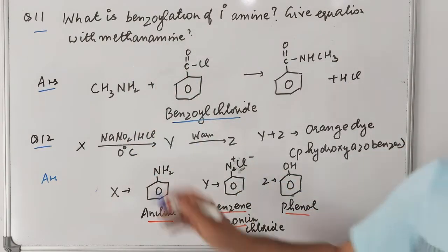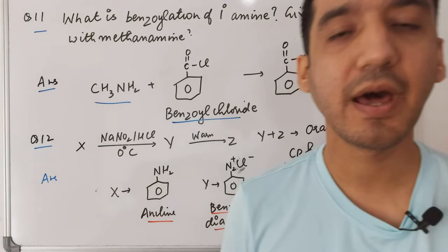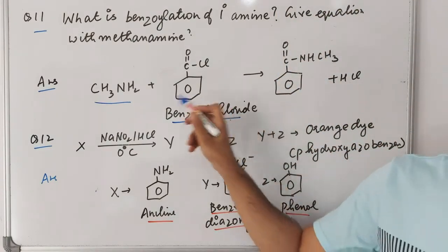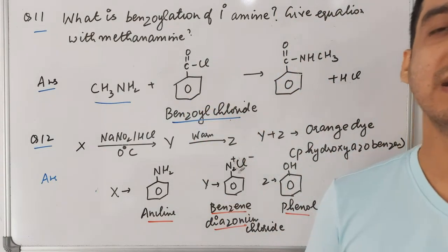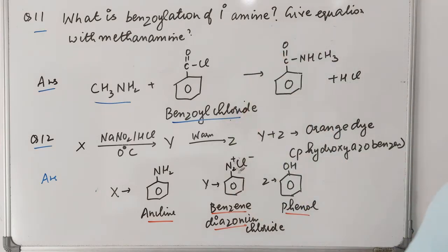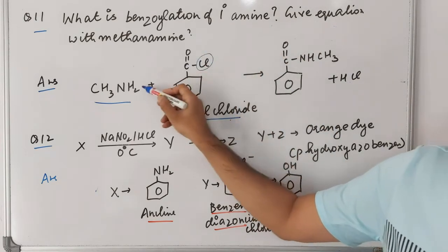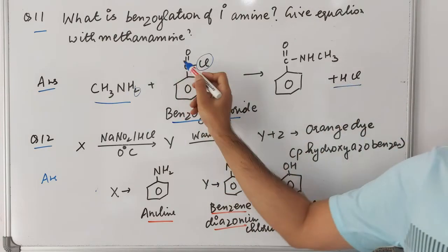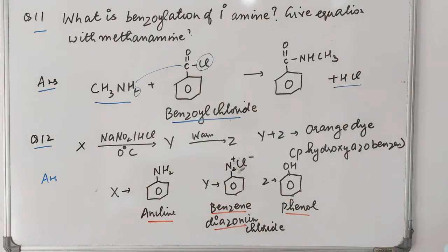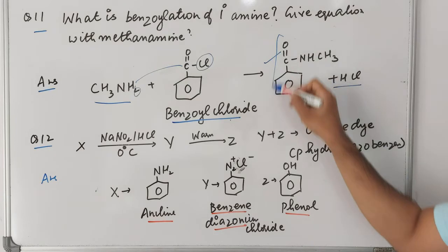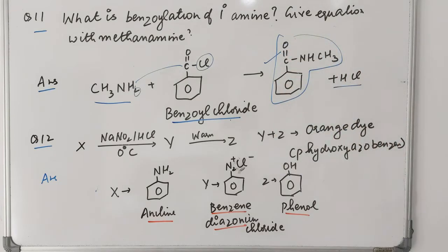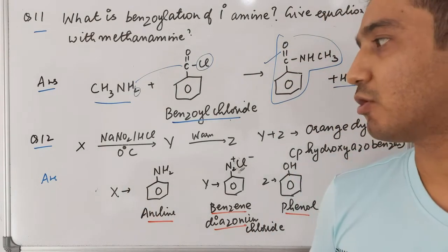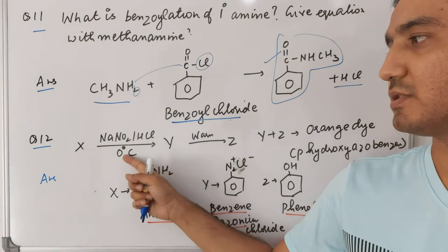Question eleven: what is benzoylation of a primary amine? Give an example with methylamine. In benzoylation, a primary amine reacts with benzoyl chloride. The Cl and one H from the amine react to form HCl, and the two compounds join together to form the benzoylated product.